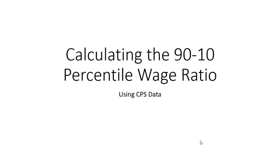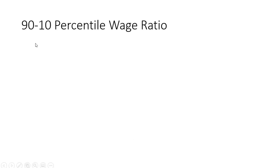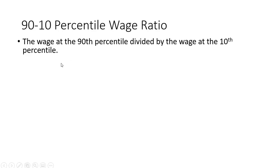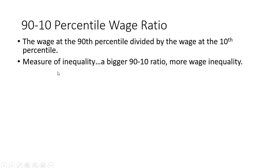Hello. In this video, we're going to calculate the 90-10 percentile wage ratio using the current population survey. The 90-10 percentile wage ratio is the wage at the 90th percentile divided by the wage at the 10th percentile. It's a measure of wage inequality — a bigger 90-10 ratio means more wage inequality.